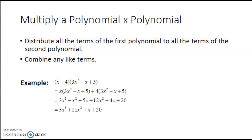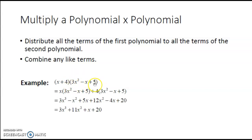When we multiply, we will use the product rule whenever possible — if we have the same base, we add the exponents together. Then we will combine any like terms. So for the binomial times trinomial example, we take the first term x and multiply it by all of the terms of the trinomial, then take the second term 4 and multiply that by all of the terms of the trinomial. Writing that out breaks it down to a monomial times a polynomial.